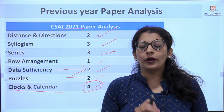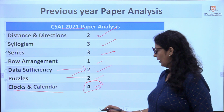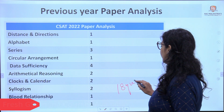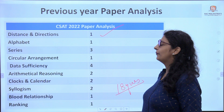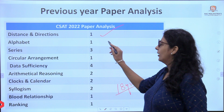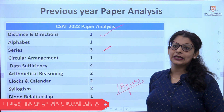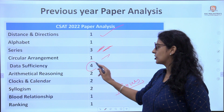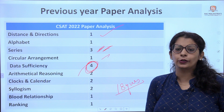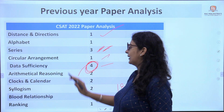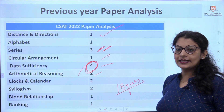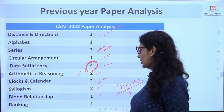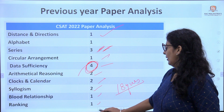In 2022, there were 18 questions of reasoning. One question came from Distance and Direction, one from Alphabet, three from Series, one from Circular Arrangement, four from Data Sufficiency, two from Arithmetical Reasoning, two from Calendar and Clock, two from Syllogism, one from Blood Relationship, and one from Ranking.